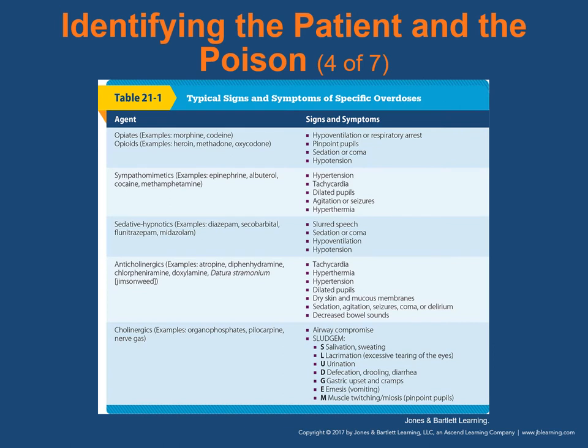Looking at opiates such as morphine and codeine, and opioids such as heroin, methadone, and oxycodone — these produce specific signs and symptoms including hypoventilation or respiratory arrest, which is peculiar to opioids. People stop breathing. They also have pinpoint pupils, they'll be sedated or in coma, and always look for hypotension. The drug we use in this case is Narcan.